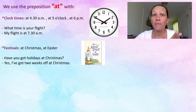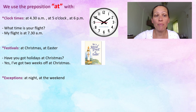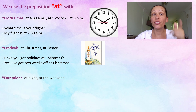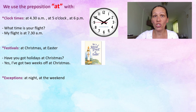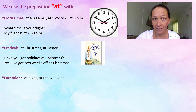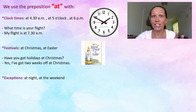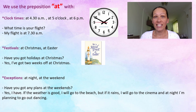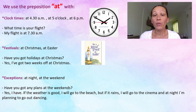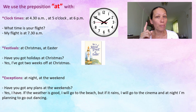When there are rules, there are exceptions. Here we have two exceptions: 'at night' and 'at the weekend'. As you remember, with times of the day we use 'in' — in the morning, in the afternoon, in the evening. But with 'night', we say 'at night'. And we use 'at the weekend' — even though we use 'on' for individual days of the week, when we talk about the weekend we use 'at'. For example: have you got any plans at the weekend? Yes, if the weather is good I will go to the beach, but if it rains I will go to the cinema. And at night, I am planning to go out dancing.